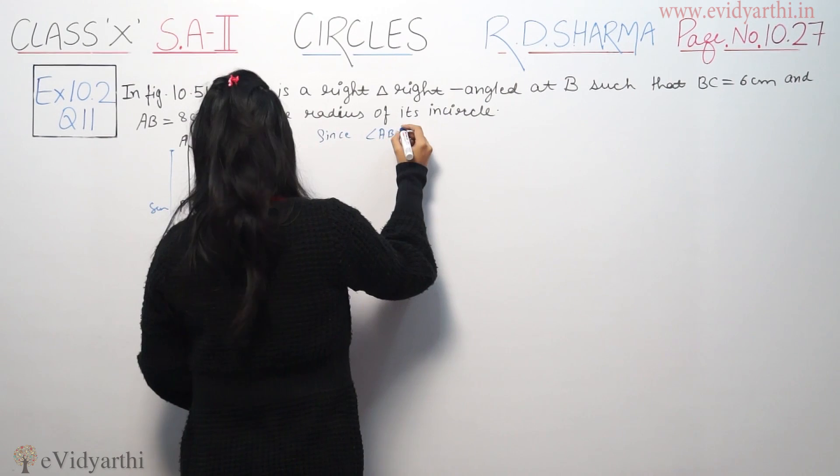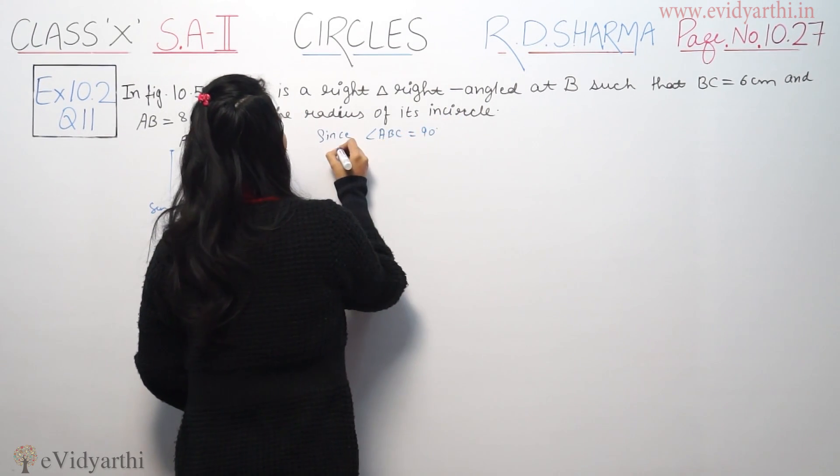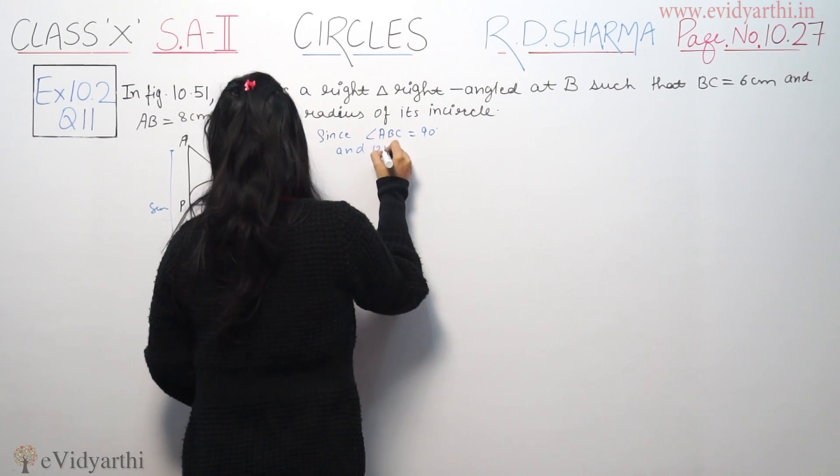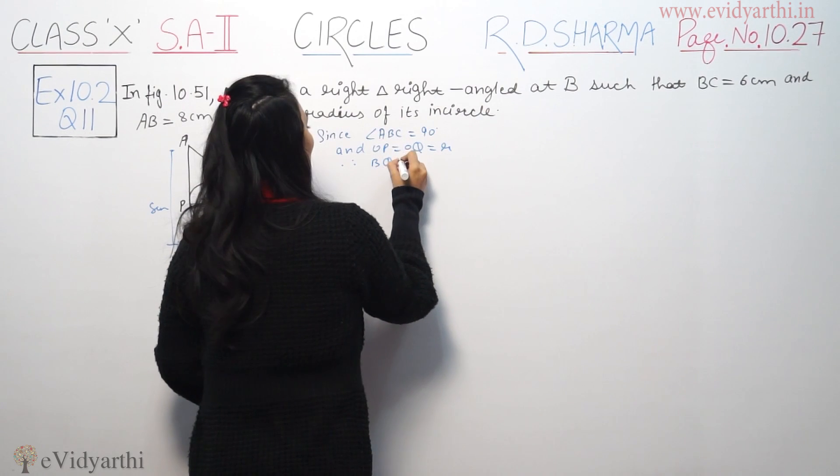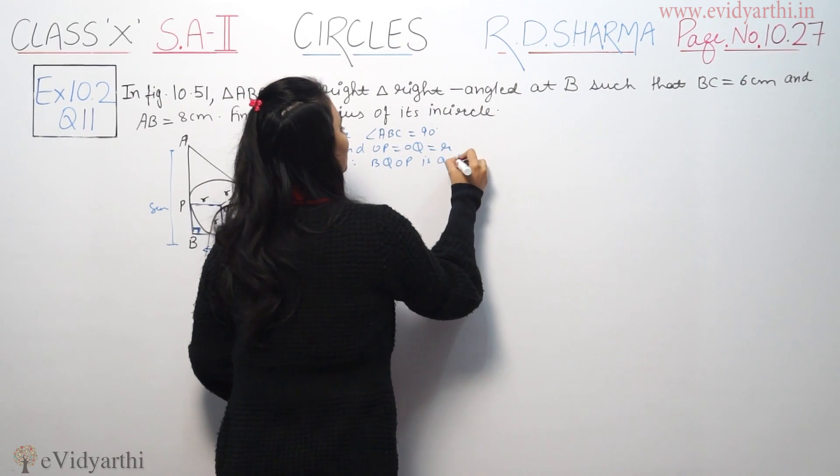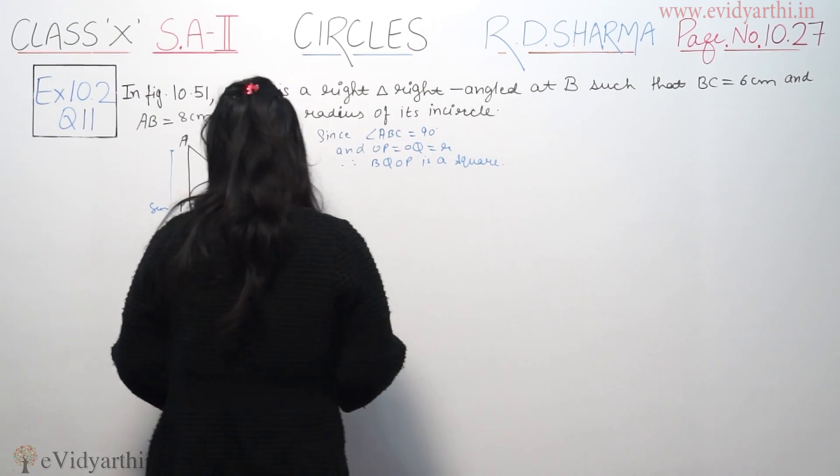And angle ABC is equal to 90 degrees. And OP is equal to OQ is equal to the radius. Therefore, BQOP is a square. There is a square here, you see.